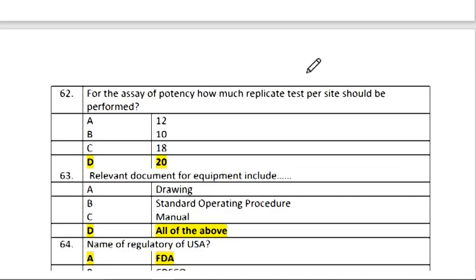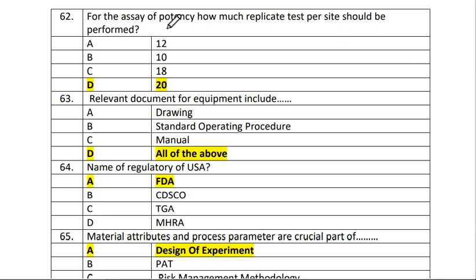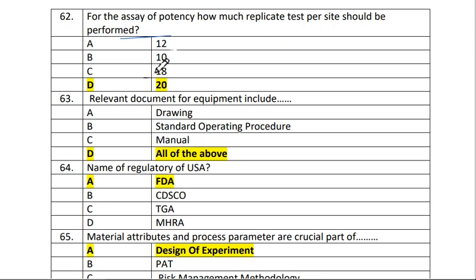Next is question number 62. For the assay of potency, how many replicate tests per site should be performed? The answer is D, 20.